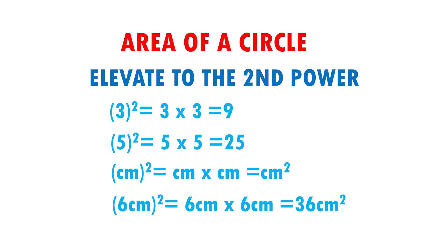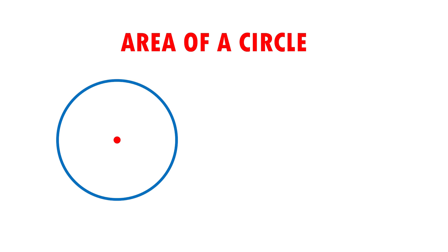Now, we are going to see some examples. Here I have a circle and it has a radius of 5 centimeters. First, I put my formula: Area equals pi times radius squared.